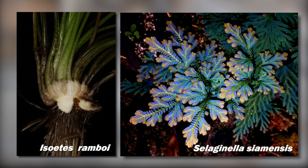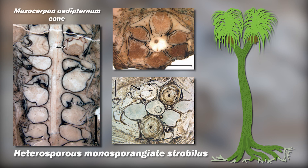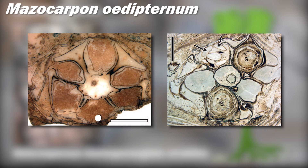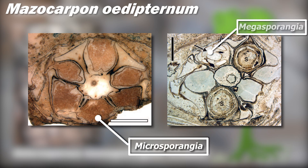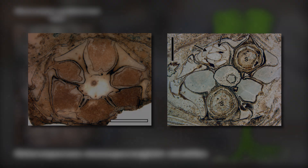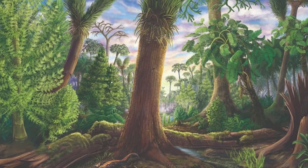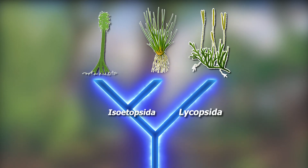Furthermore, like quillworts and Selaginella, Sigillaria was a heterosporous lycophyte with monosporangiate reproductive organs, resulting in cones which contained either microsporangia or megasporangia that produced microspores or megaspores. As a consequence, Sigillaria and other lepidophytes share a close kinship with Isoetes, more related to each other than to Lycopodium.